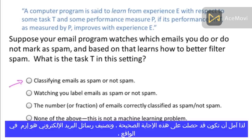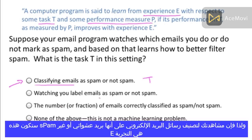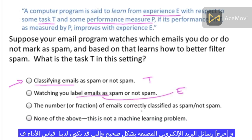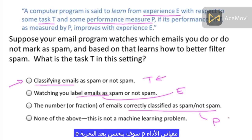Hopefully you got that classifying emails is the task T. This definition defines a task T, a performance measure P, and experience E. Watching you label emails as spam or not spam would be the experience E. The fraction of emails correctly classified might be our performance measure P. And so our system's performance on the task T, as measured by P, will improve after the experience E.